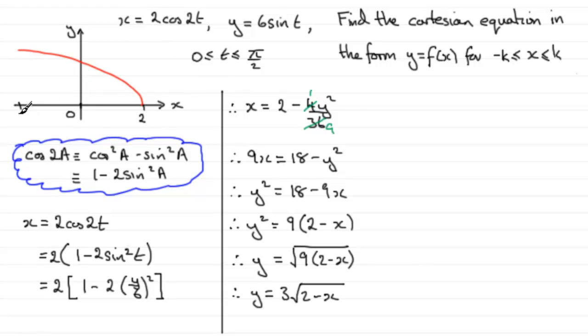If we're to get this lower limit here, what we could do is substitute t equal to π upon 2 for x. Let's do that. Let's just say when t equals π upon 2. What do we get then? Well, we get that x equals 2 cos of 2 lots of π upon 2. In other words, simply π.